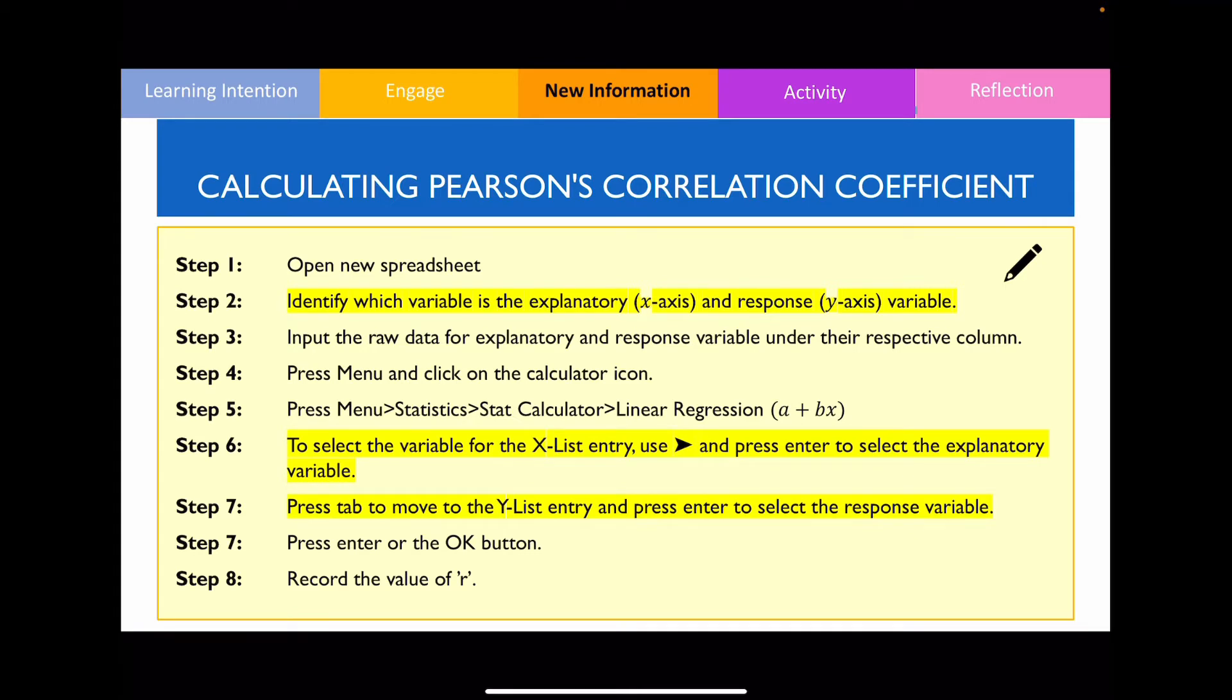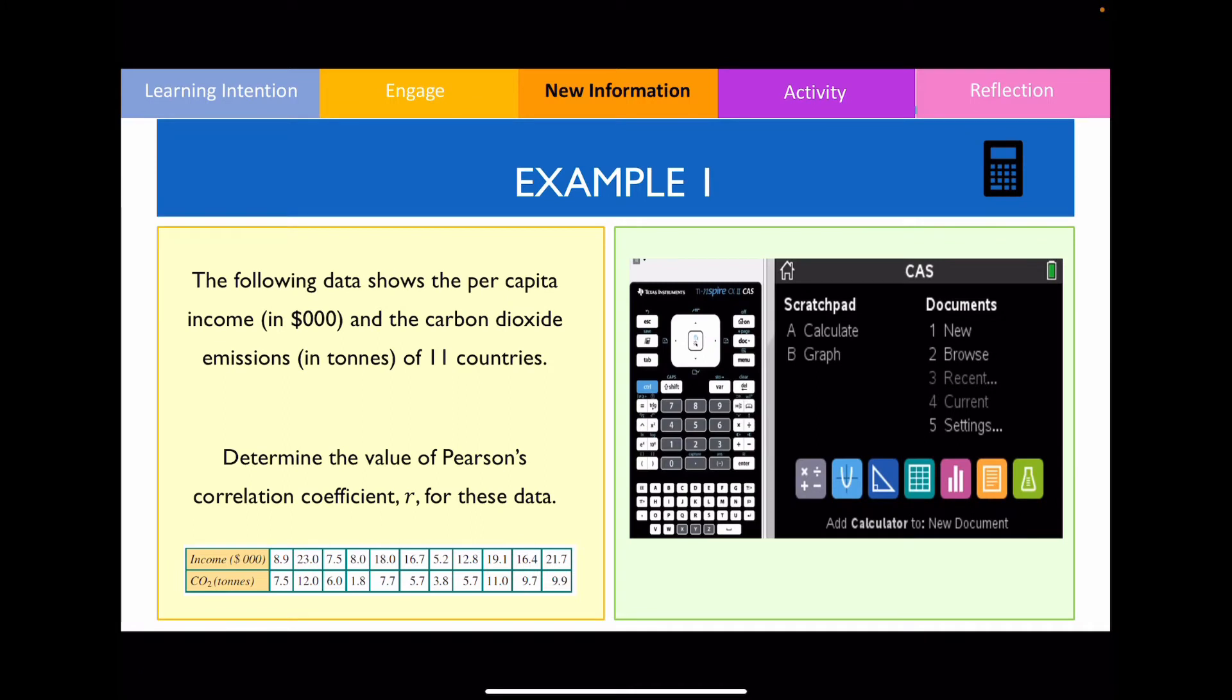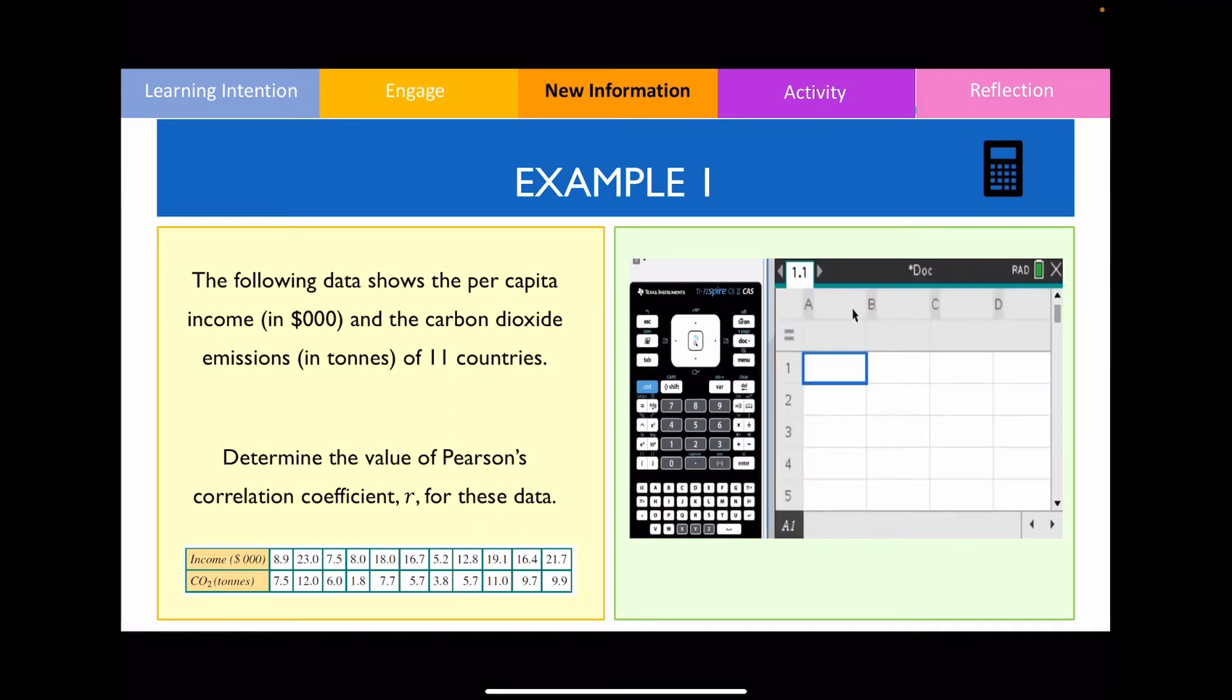So let me show you how to do this using 2 examples. The first step is to open the spreadsheet and I'm going to enter down all the values for each of my two variables. Now just to keep in mind that you need to label your columns before you start this, and once you've listed down all the values into the spreadsheet, what you want to do next is identify the EV and the RV.